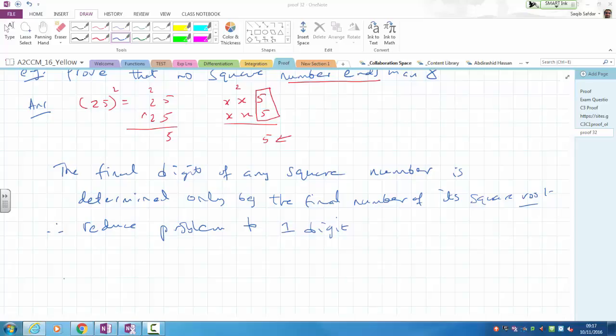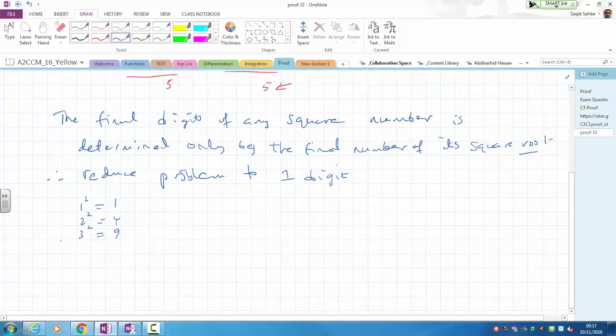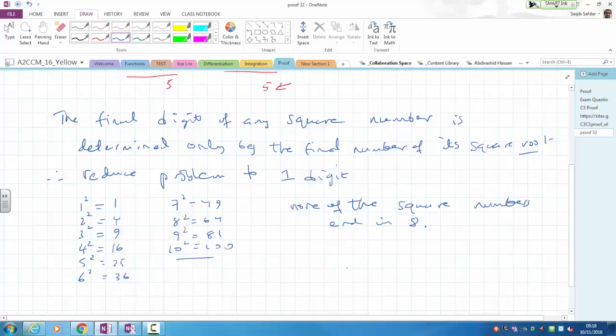All we have to do then is just square out our numbers. So this is one squared, two squared, three squared. So one, four, nine. And we can just write out all the possibilities. 16, five squared, six squared, seven squared, eight squared, nine squared, and ten squared. Obviously, that's two digit number. But we can just say none of the squared numbers end in eight.